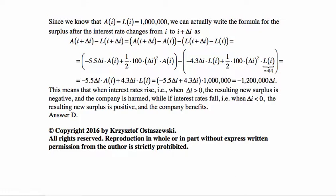But both A(I) and L(I) are a million, so this ends up being minus 5.5 delta I plus 4.3 delta I times a million. Minus 5.5 plus 4.3 is negative 1.2. Negative 1.2 times a million is negative 1,200,000, so this quantity is equal to negative 1,200,000 times delta I.